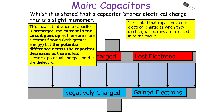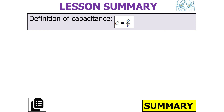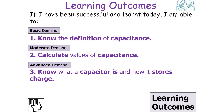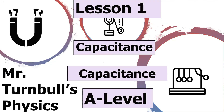In today's lesson we've learned the definition of capacitance: C = Q/V. If successful, you should now be able to understand the definition of capacitance, calculate values of capacitance, and know what a capacitor is and how it stores charge. I hope you've enjoyed today's lesson looking at capacitance in the capacitance topic for AQA A-level physics. Thank you very much and have a lovely day.